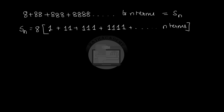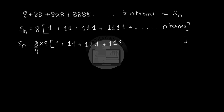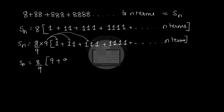Now, 1 + 11 + 111 + ... is still neither an AP nor a GP. So we will multiply and divide the entire thing by 9. The sequence remains the same. When the 9 in the numerator gets multiplied and distributed to all the terms inside the bracket, it becomes 9 + 99 + 999 + 9999 + ... to n terms.